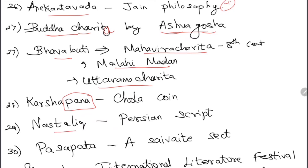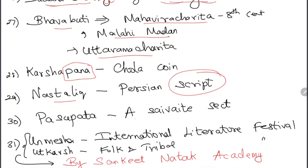Nastaliq is a Persian script. Pashupata is a Shaivite sect. Unmesha is an international literature festival; Utkarsh is a folk and tribal festival — both inaugurated by the Sangeet Natak Akademi of India.